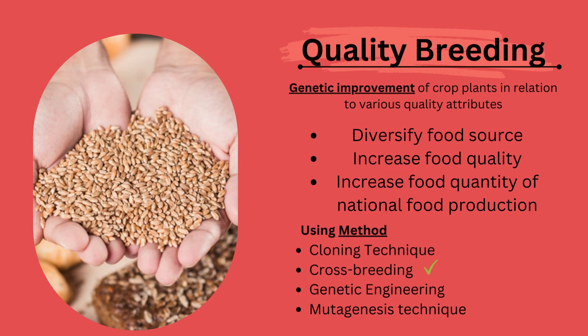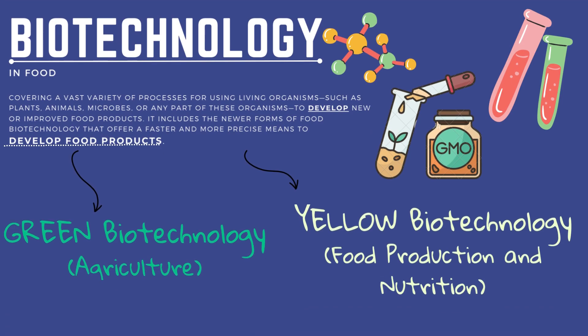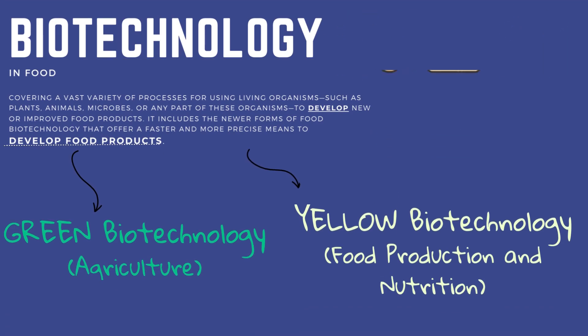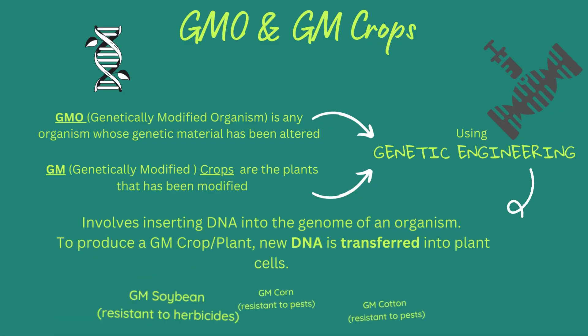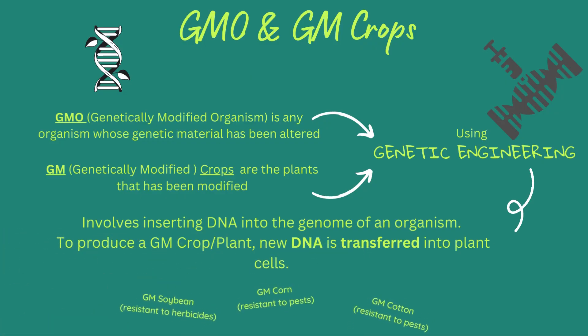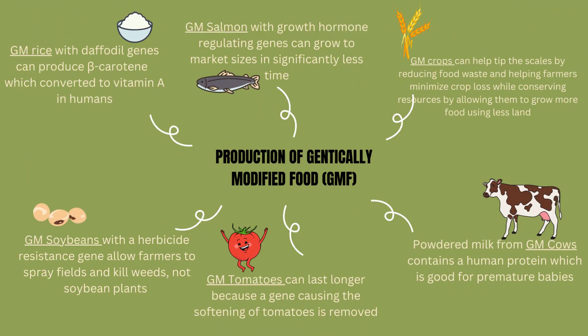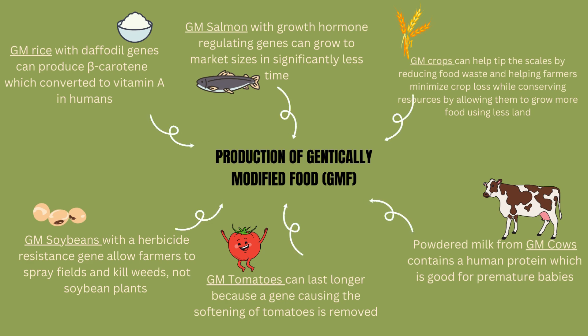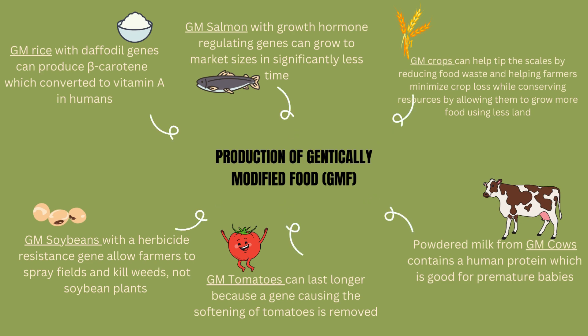For biotech, we split the aid into green biotech for agriculture, and yellow biotech for production and nutrition. GMO and GM crops are the products of biotech in food. Examples include GM rice, salmon, crops, soybeans, tomatoes, and cows. These are examples of genetically modified food. You can pause to look through.